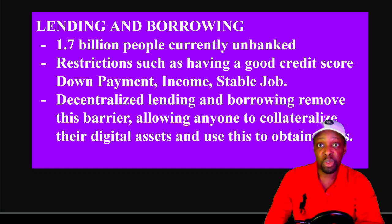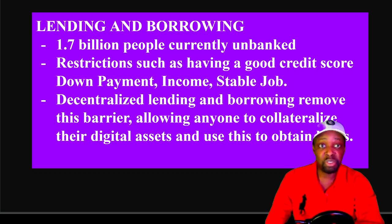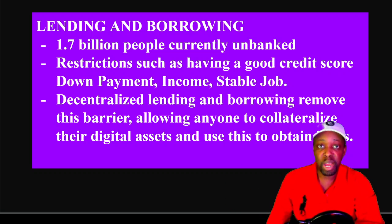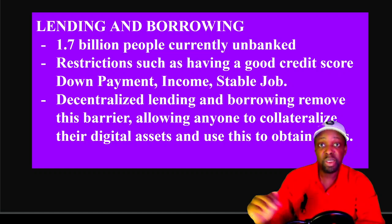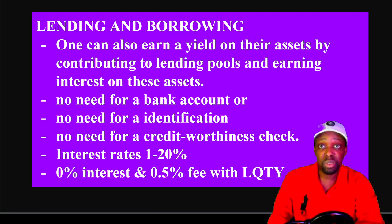There are 1.7 billion people currently unbanked, and around 60% of them have a cell phone, so they could access DeFi platforms through their phone. Restrictions to traditional lending and borrowing include credit scores, down payments, good income, and stable employment. Decentralized lending and borrowing remove these barriers, allowing anyone to collateralize their digital assets to obtain loans. For example, you can put up Bitcoin or Ethereum, get a loan in dollars, purchase a car, and pay just a 0.5% lending fee with terms you set yourself.